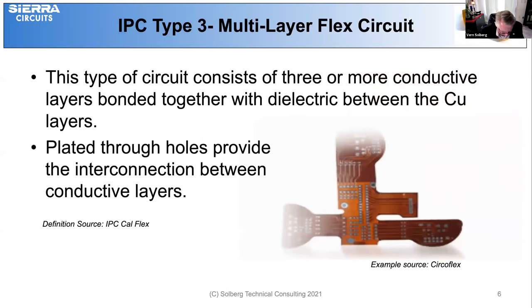In Type 3, the circuit consists of three or more conductive layers stacked and bonded together with thin dielectric adhesive film layers. The plated through vias are formed following lamination to provide interconnect between layers.